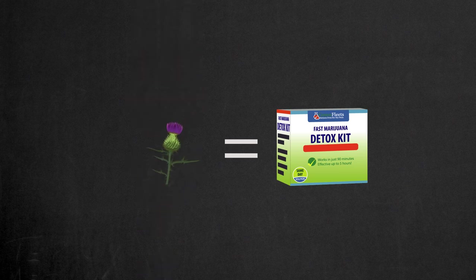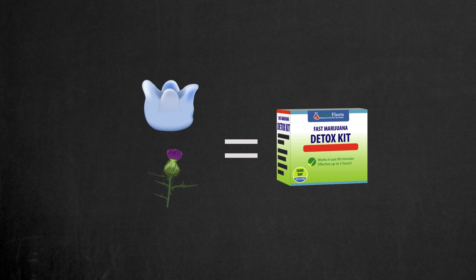Milk thistle inhibits CYP and UTG enzymes activity, so less THC is metabolized for the excretion through the urine.